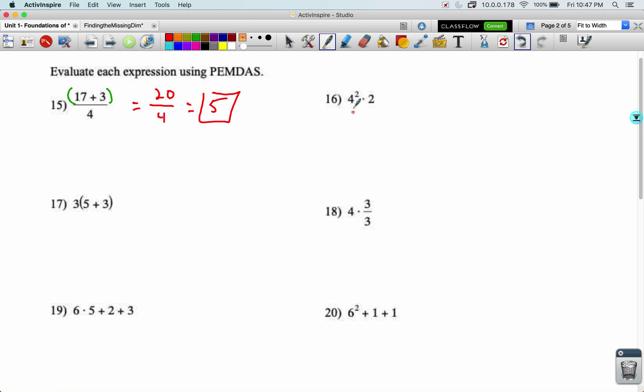Four squared times two. I'm going to do the exponent first. Four squared becomes a 16. Keep the times two. Now combine those and this becomes a 32.